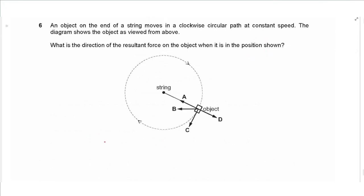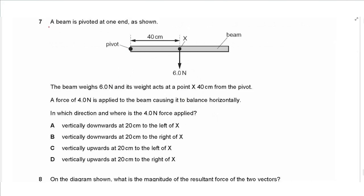Question 6: an object on the end of a string moves in a clockwise circular path at constant speed. For any object moving in circular motion at constant speed, the resultant force is directed towards the center — this is also called the centripetal force.